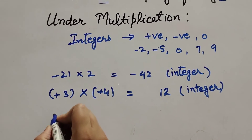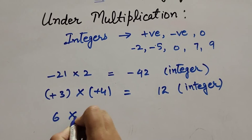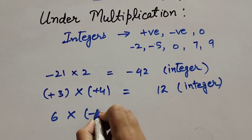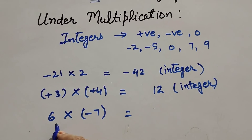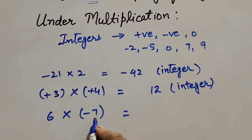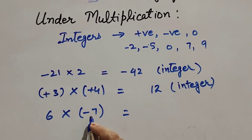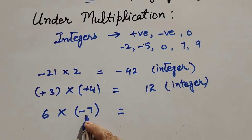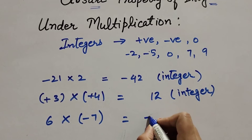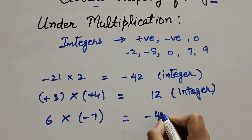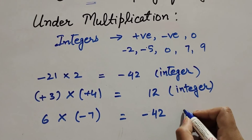Let us take one more example: six multiplied by minus seven. Six is a positive integer and minus seven is a negative integer. Six multiplied by minus seven equals minus forty-two. Minus forty-two is also a negative integer.